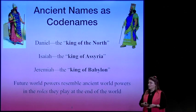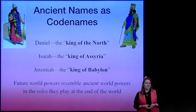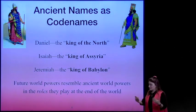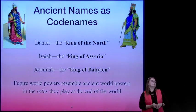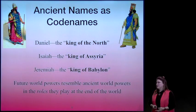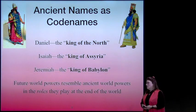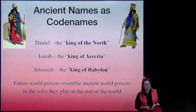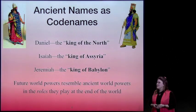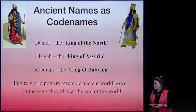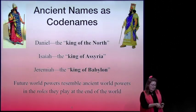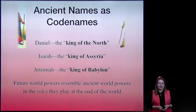Some of the ancient names used as code names: Daniel used the king of the north as the end-time bad guy. Isaiah will call him the king of Assyria. And Jeremiah will call him the king of Babylon. Future world powers resemble the ancient world powers in the roles they play at the end time of the world.